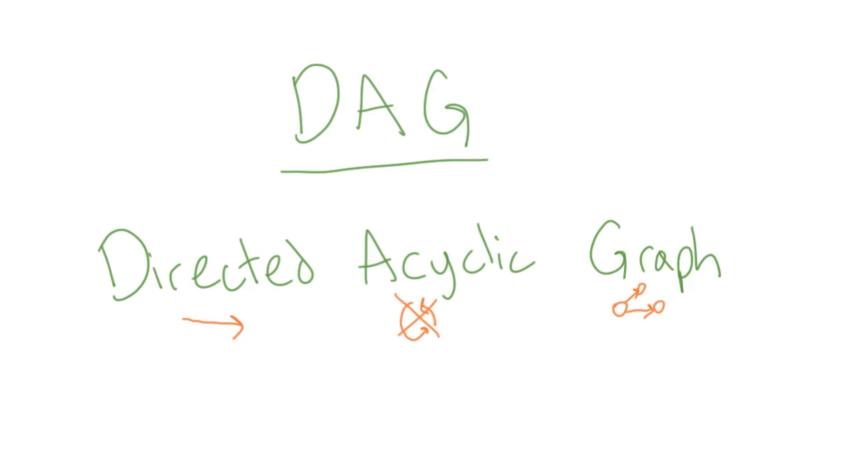One type that shows up often is a DAG or directed acyclic graph. It's really just what it sounds like, a directed graph with no cycles.